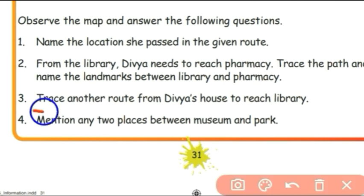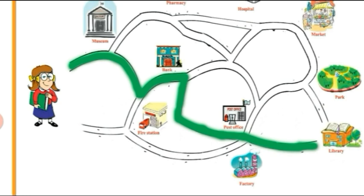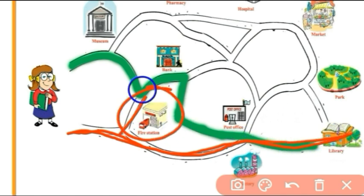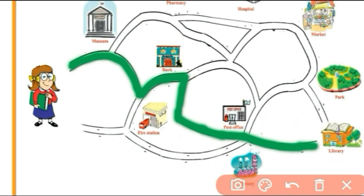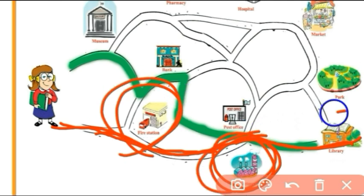Next, trace another route from Divya's house to reach the library. We have to find another route. Divya can go through Fire Station, Pharmacy, and Library. The landmarks are: Fire Station, Pharmacy, Library.